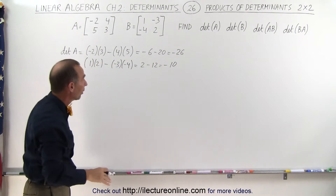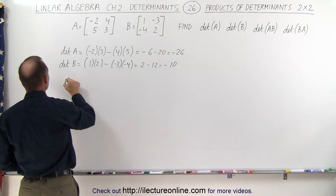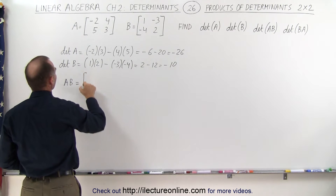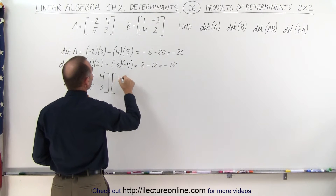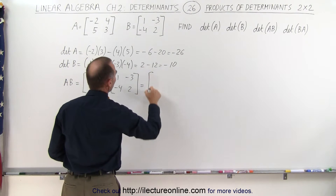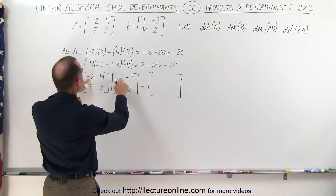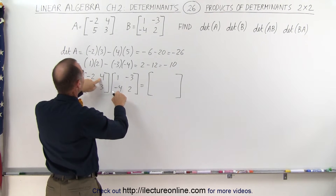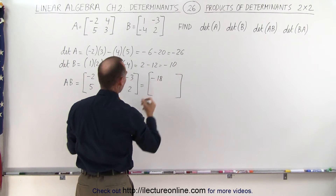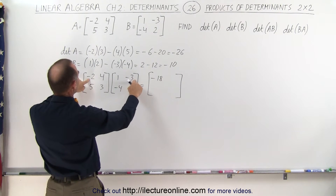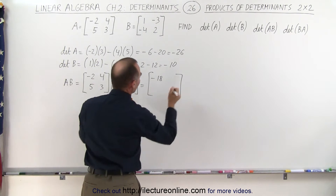So those are the results for the determinant of A and B. Now let's multiply A and B together. When we multiply A times B, we get a 2 by 2 matrix. For the first element, multiplying the first row by the first column: minus 2 times 1 plus 4 times minus 4, that's minus 2 minus 16, which gives us minus 18. For the second element: minus 2 times minus 3 is 6, plus 4 times 2 is 8, giving us 14.